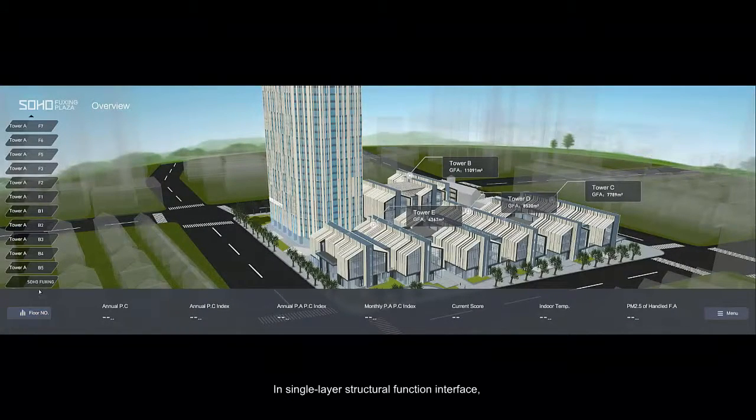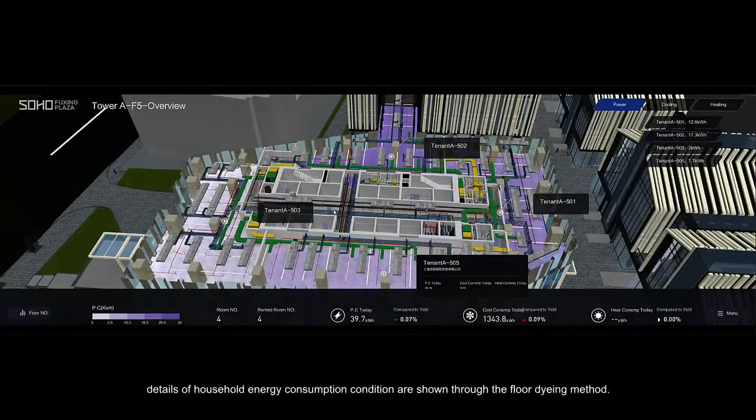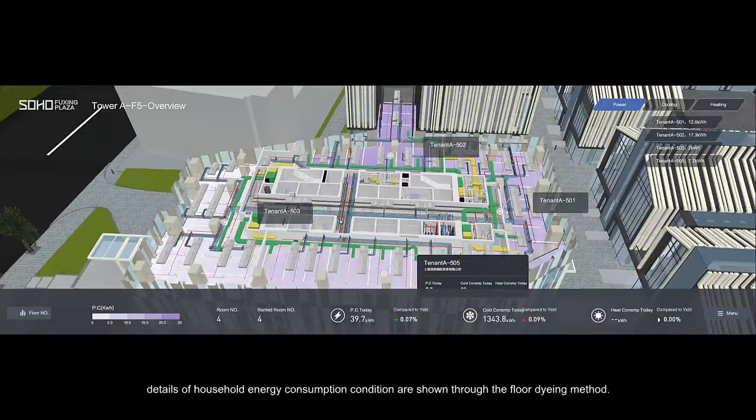In the single-layer structure function interface, details of household energy consumption conditions are shown through the flow dyeing method.